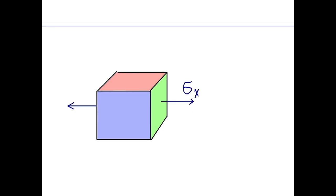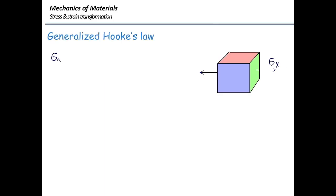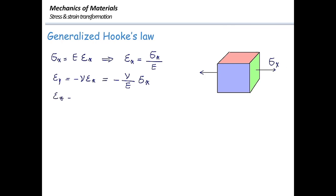Let me draw that here for you — a three-dimensional stress element subjected to stress in the x direction. Sigma x would be E multiplied by epsilon x. If I want to determine strain in terms of stress, that would be epsilon x is equal to sigma x divided by E. That's valid for the case where we have just stress in one direction. Using Poisson's ratio, we know there will also be strains in the perpendicular directions: epsilon y equals negative nu over E multiplied by sigma x, and similarly, strain in the z direction has the same value.